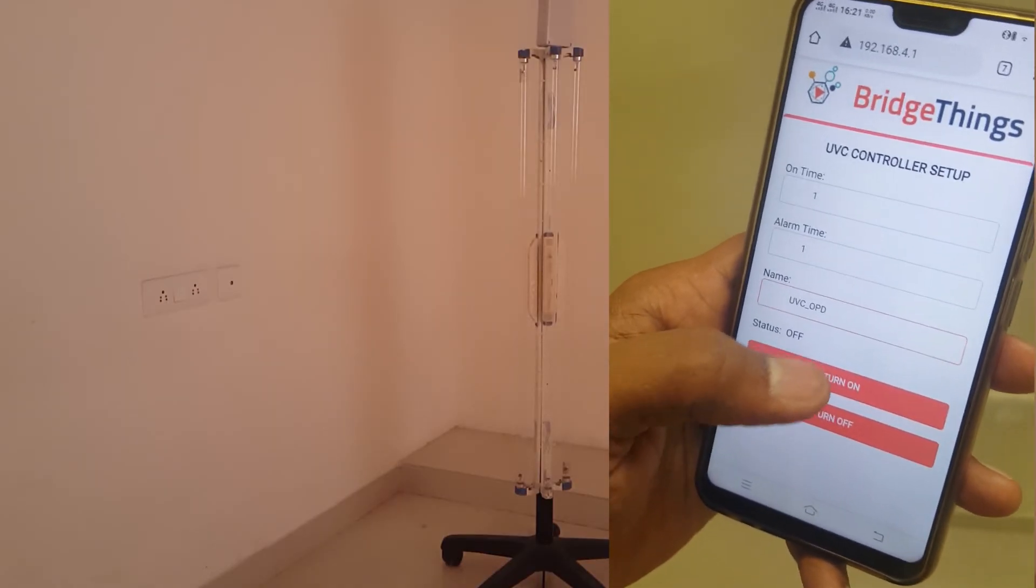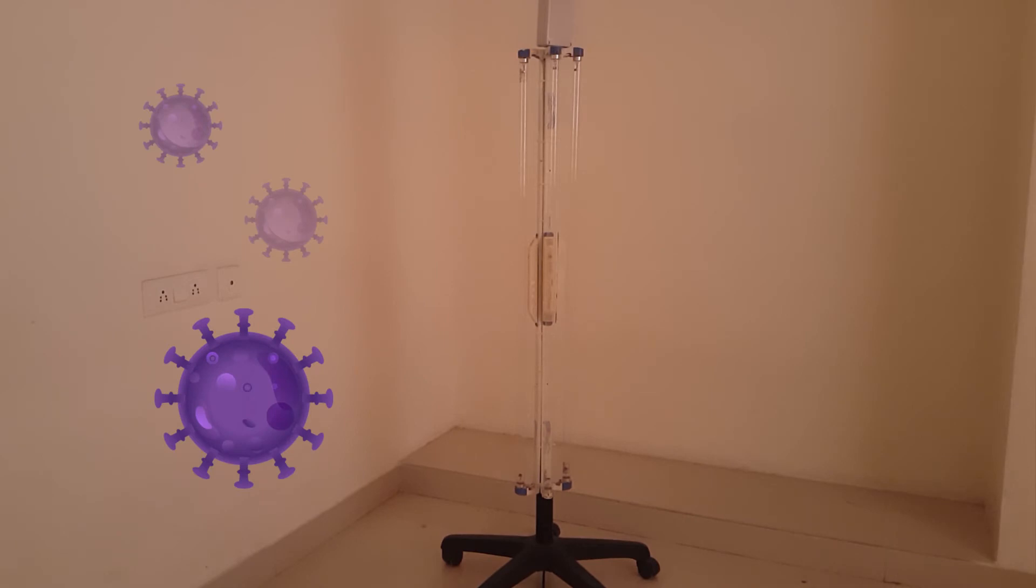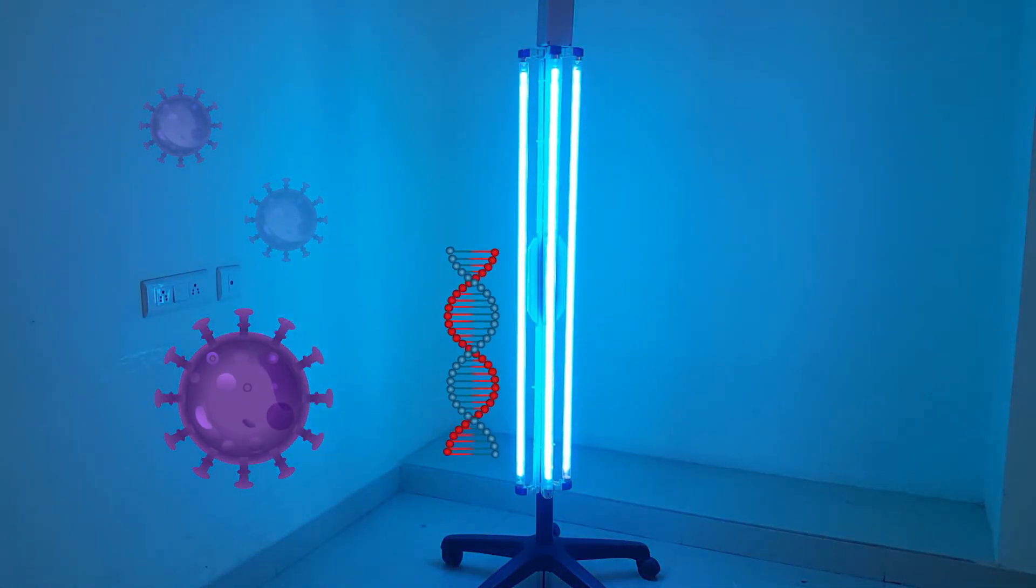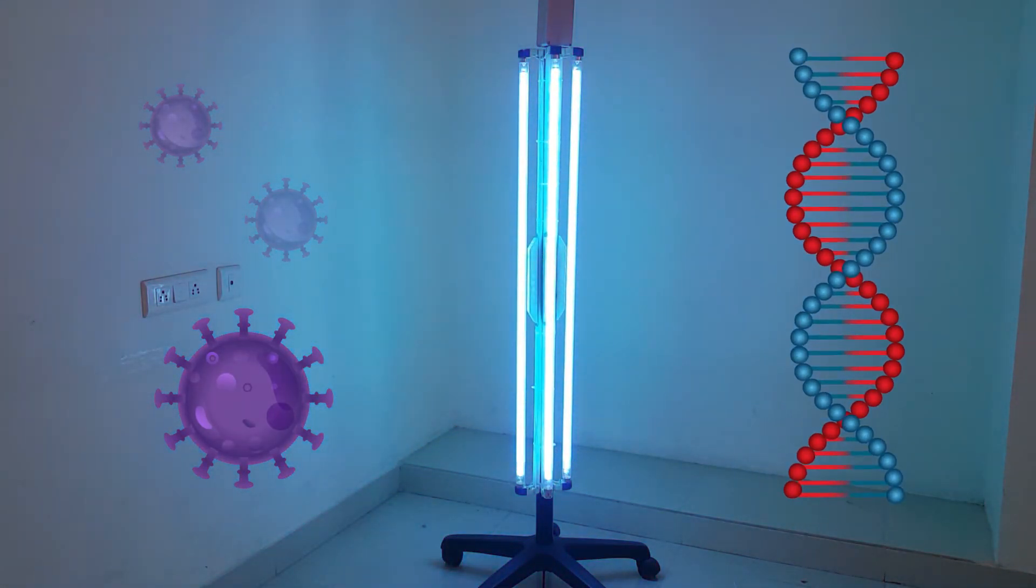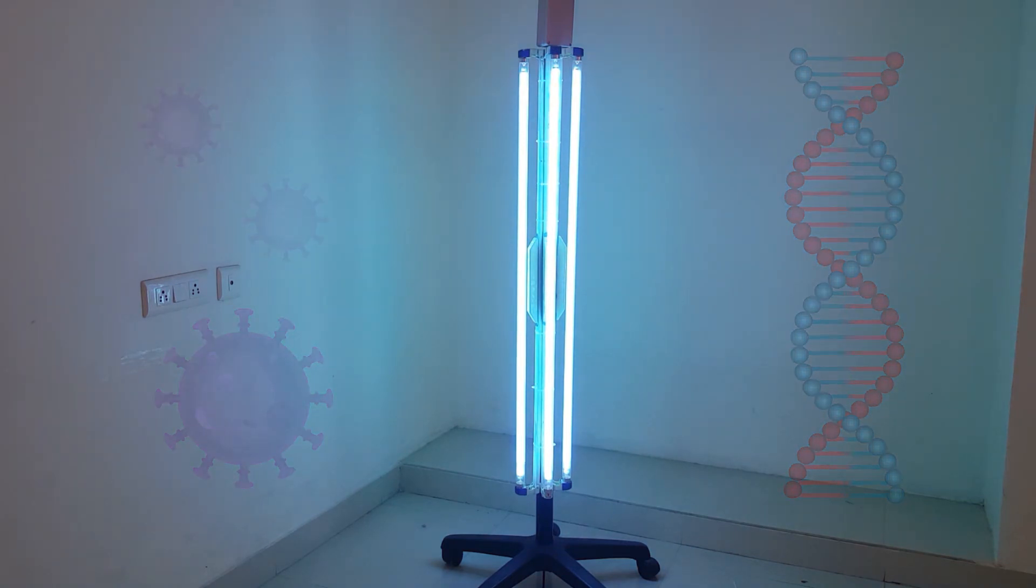Once turned on through mobile, the UVC tower starts the disinfection process with a 254 nanometers light, resulting in thymine dimers in the virus's RNA, making them ineffective to replicate.